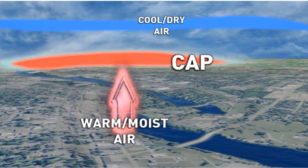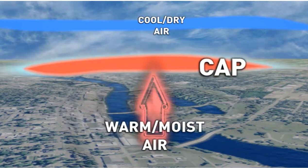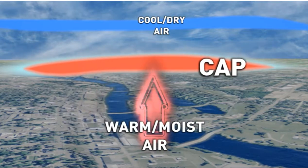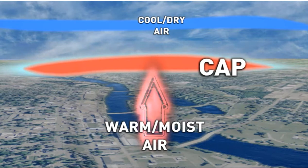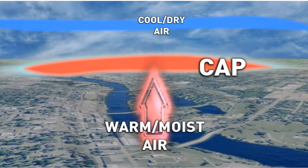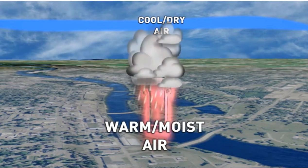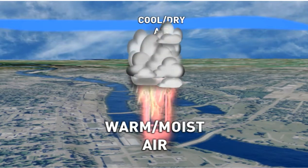Now, when there is that cap in place, it can actually allow — at times it can either hold it completely at bay, as you see here, or it can allow it to backbuild and backbuild and backbuild, even building in more instability and unstable air until it finally violently breaks through the cap. That's when you can see some of those strong to severe storms actually break on through.